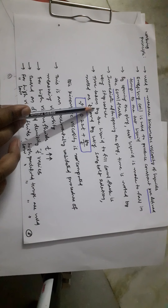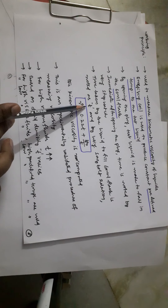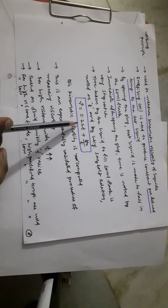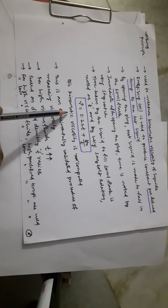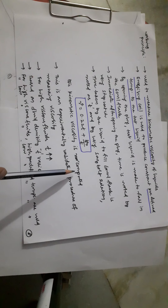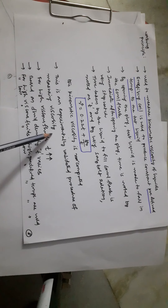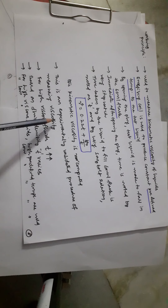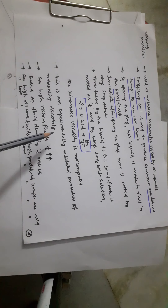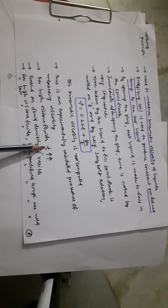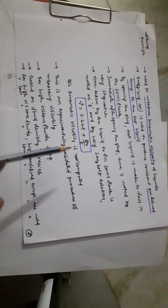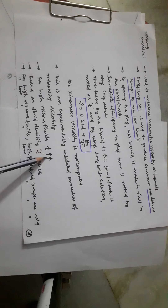Using the Saybolt relation ν = 0.22t − (180/t), the kinematic viscosity can be computed. This is an experimentally validated procedure for measuring viscosity and is standardly applied in industrial and laboratory applications. For high viscous fluids, the time taken will be large because the filling of the 60 ml flask will be slow.